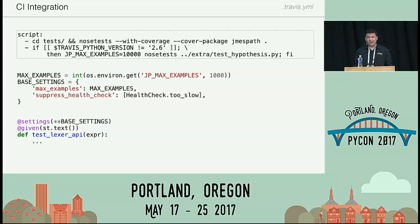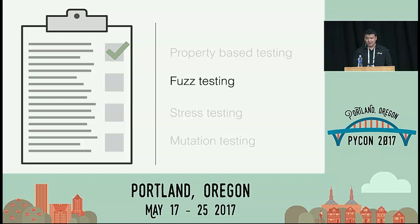The suppressed health check was also something I ran into in practice on PyPy — if setup doesn't occur fast enough, it will time out the test, so I just have that disabled, and it's worked well. That was property-based testing. Hopefully it gives you an idea of some of the things you can use it for. Now I want to move on to fuzz testing.